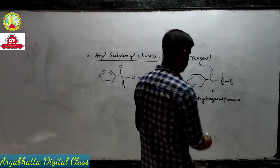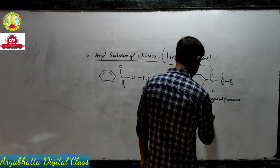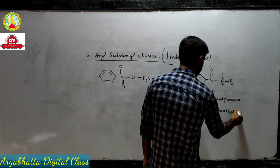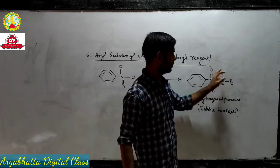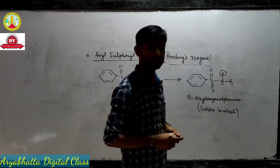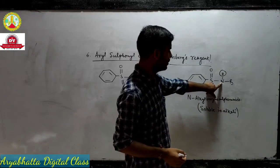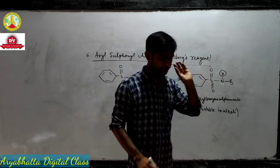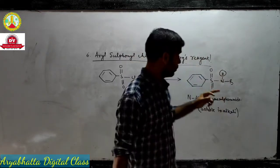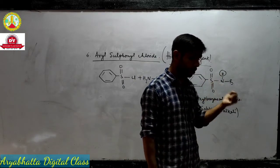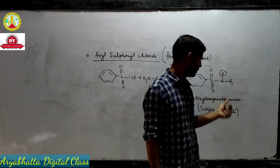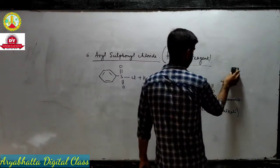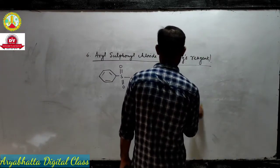This N-alkyl benzene sulfonamide is soluble in alkali, because there is a hydrogen on nitrogen. Due to this sulfonyl group, it makes this hydrogen acidic, since the group is electron-withdrawing and nitrogen is electronegative — so the hydrogen can be removed, making it soluble in alkali.